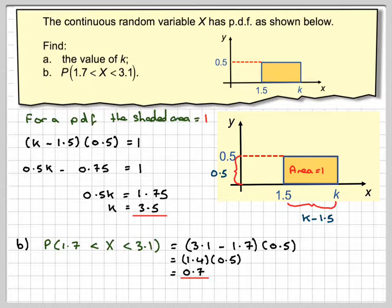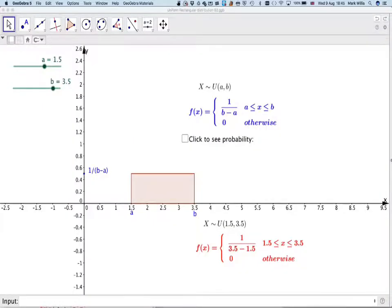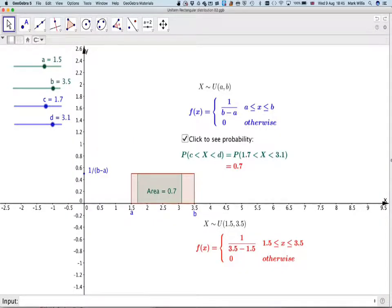Going into the GR Grappler, if you click to see the probability and put the bounds at 1.7 and 3.1, you can see that the area here is 0.7. So you can use the GR Grappler to check almost any probability once you've set up the uniform distribution function.